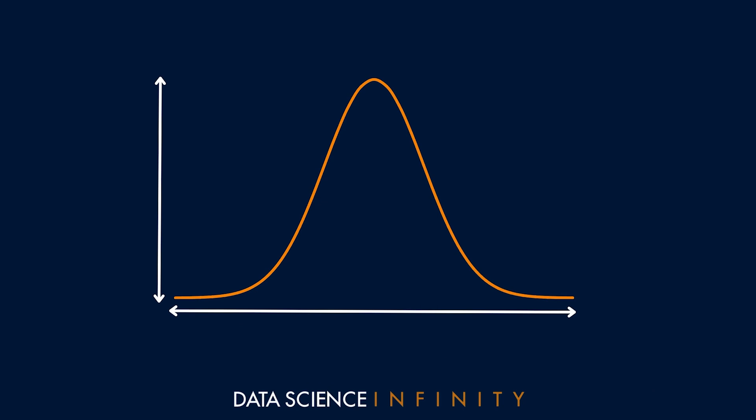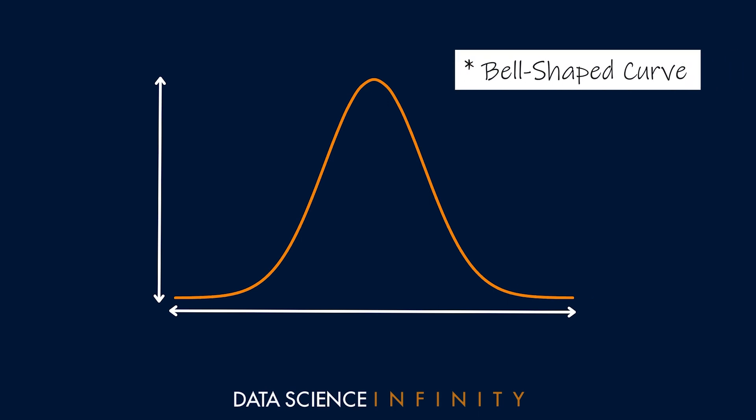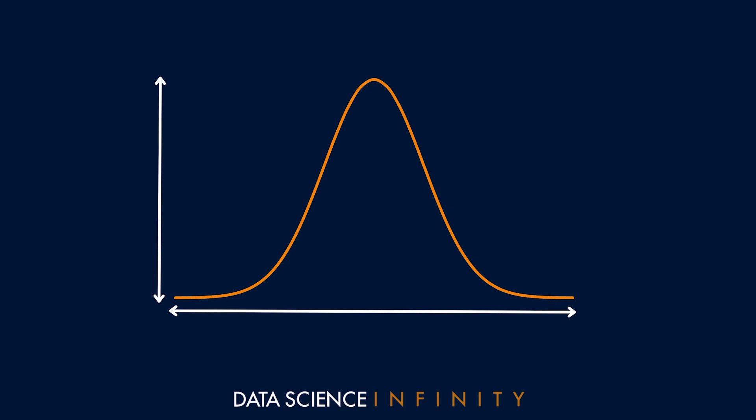Now a curve or distribution like the one we see here, I'm sure you've seen it many times before, and it's often known as a normal distribution or a Gaussian distribution. Sometimes it's just called a bell-shaped curve.